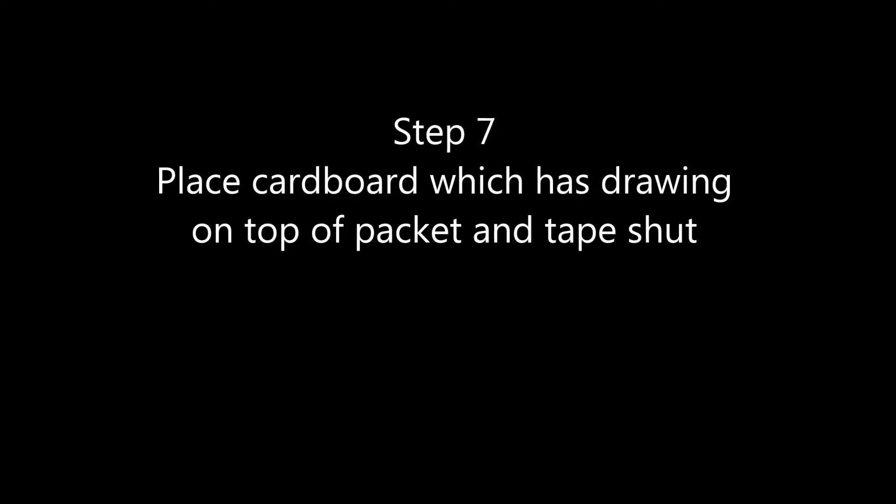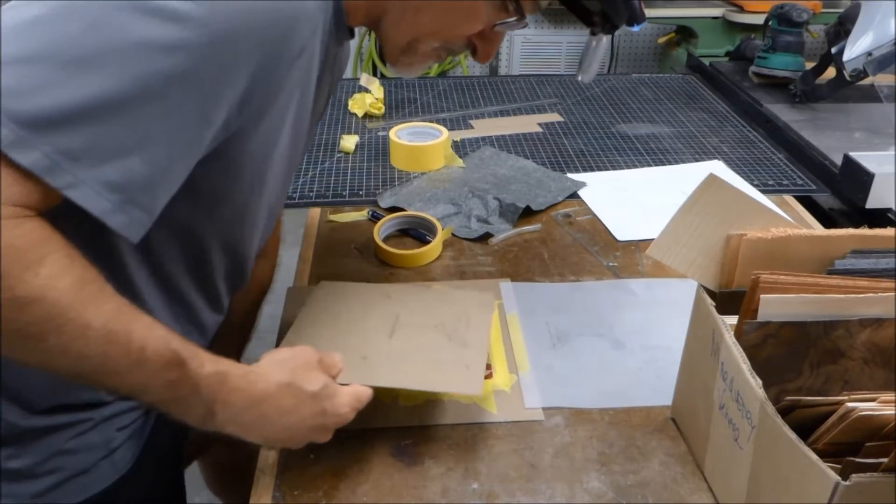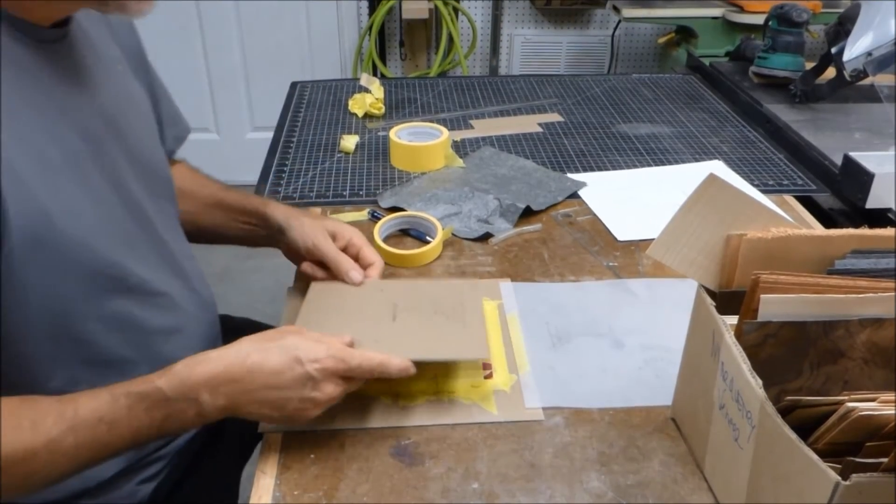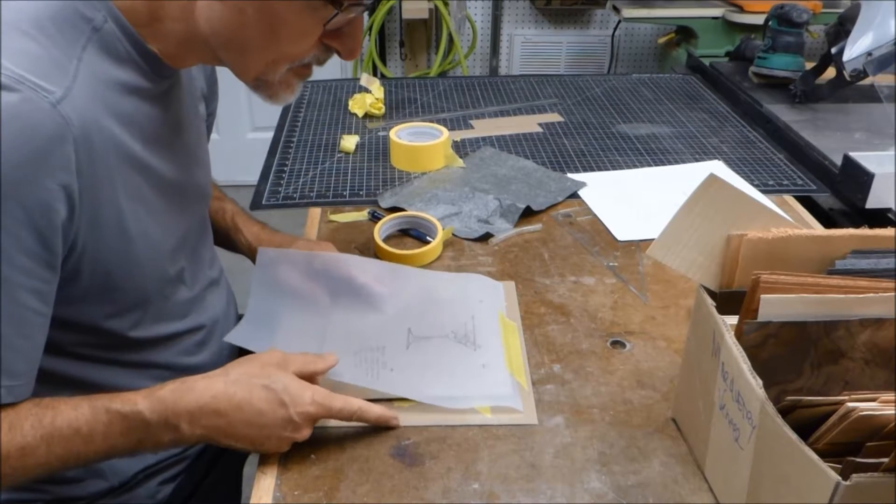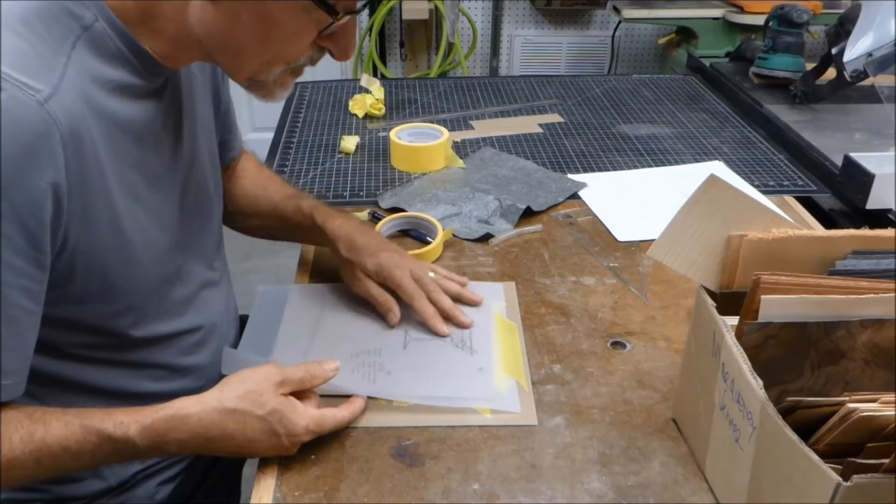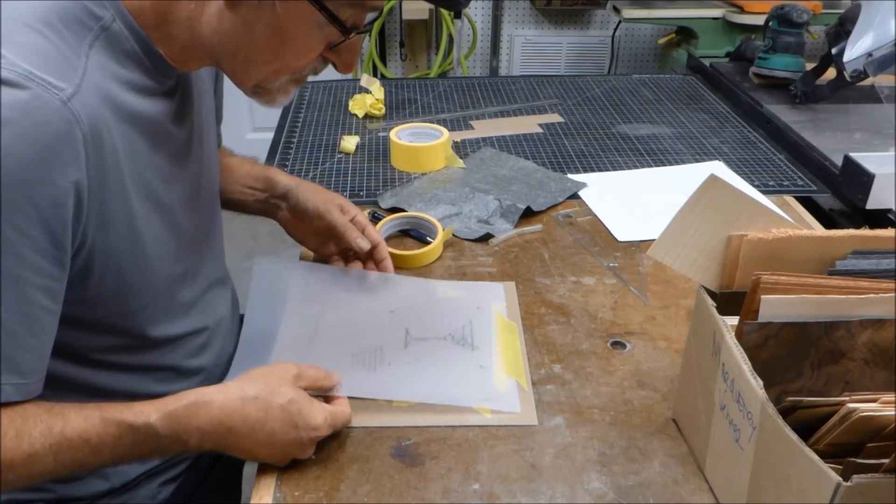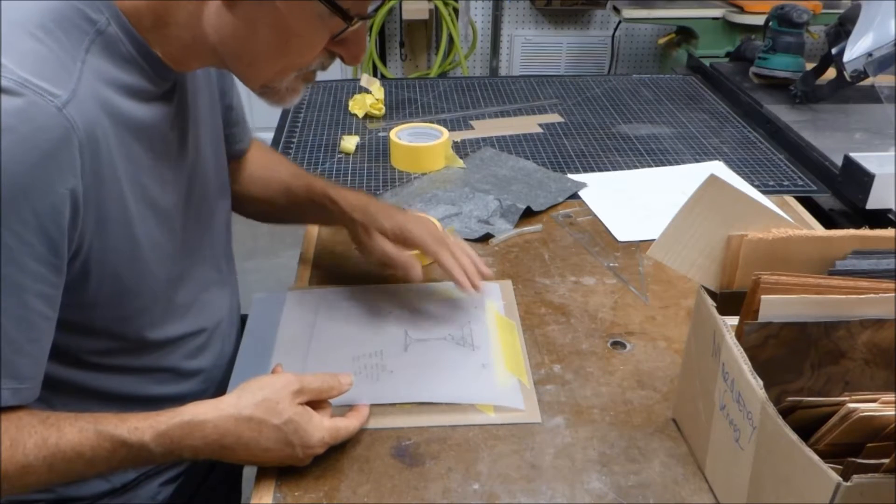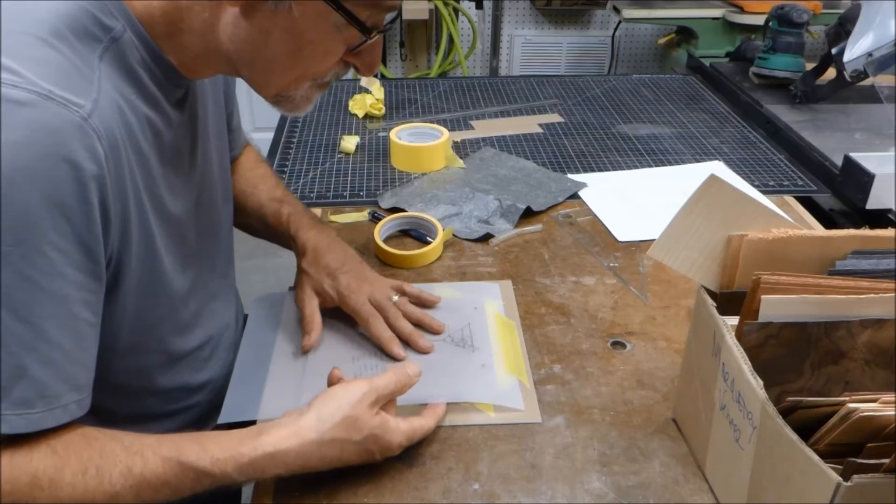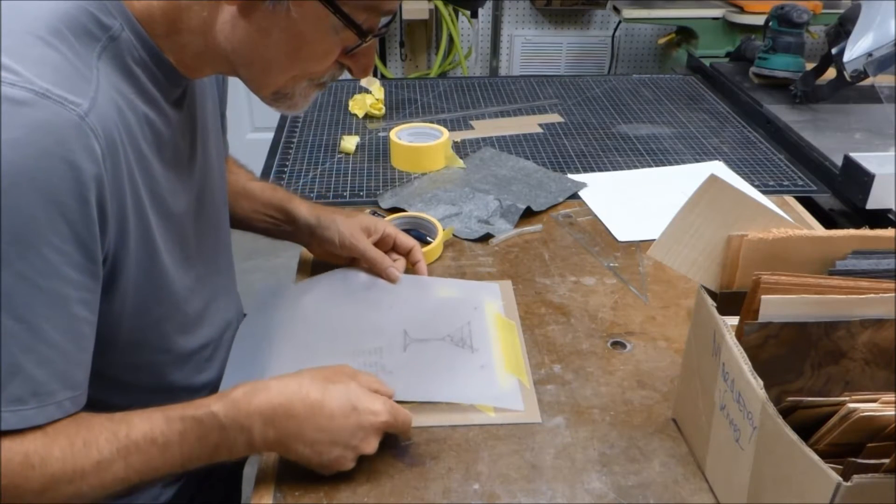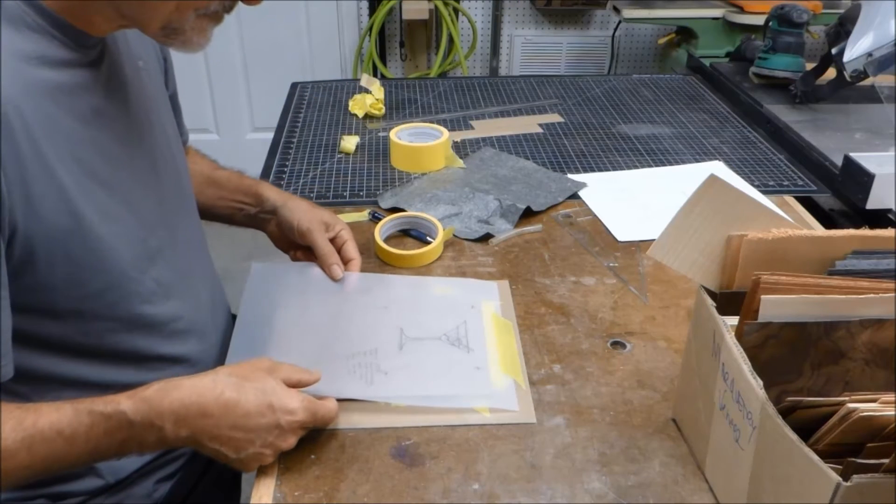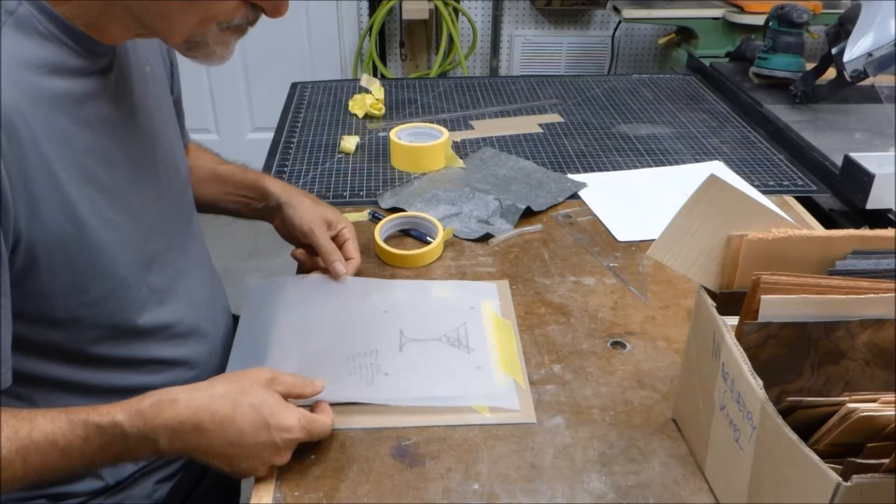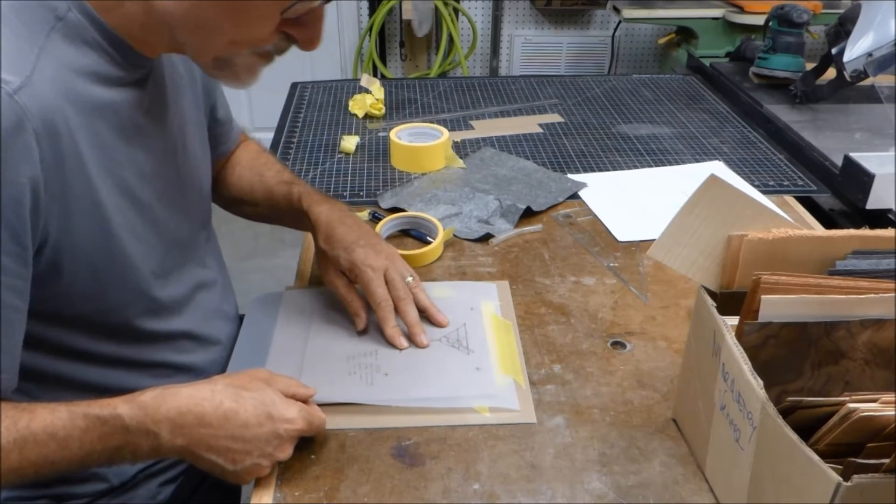Now step seven, the final step in creating the packet, is to put that cardboard that we created previously that we put the drawing on. Remember, we traced the drawing onto that. That's going to be the top of the packet. Again, we want to make sure that's aligned. Once we get that aligned up with the drawing, we just tape the whole packet closed with a bunch of tape. Now one thing I did here, when I did this drawing, I forgot, since I'm doing this video, and I used the weak yellow tape that I was using for the veneers. Really, in this case, it's best to use a stronger tape, like regular blue masking tape or whatever you have. It can be pretty strong.